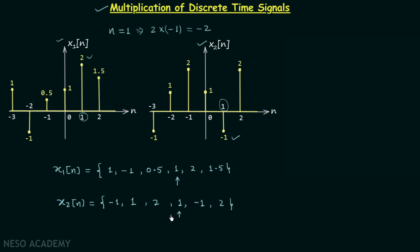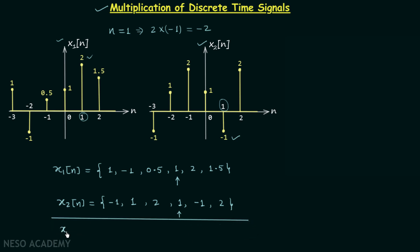We will perform the multiplication and the resultant signal is x3n. 1 multiplied by minus 1 gives minus 1. Minus 1 multiplied by 1 gives minus 1. 0.5 multiplied by 2 gives 1. 1 multiplied by 1 gives 1. 1.5 multiplied by 2 gives 3 — this is the value of x3n when n is equal to 0. 2 multiplied by minus 1 is minus 2, and 1.5 multiplied by 2 is 3.